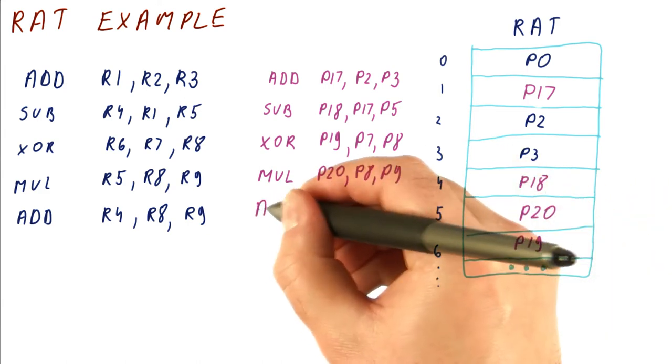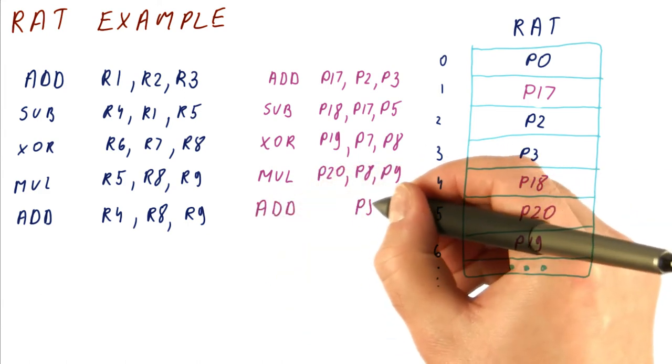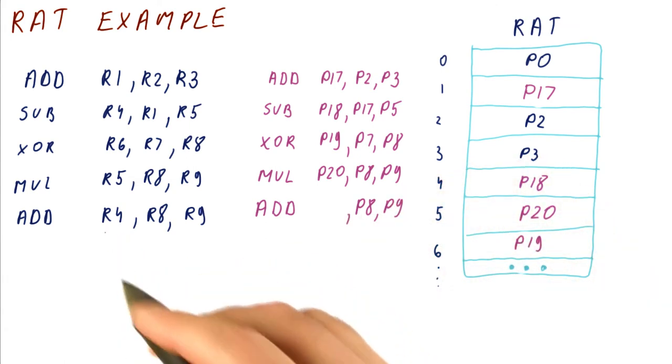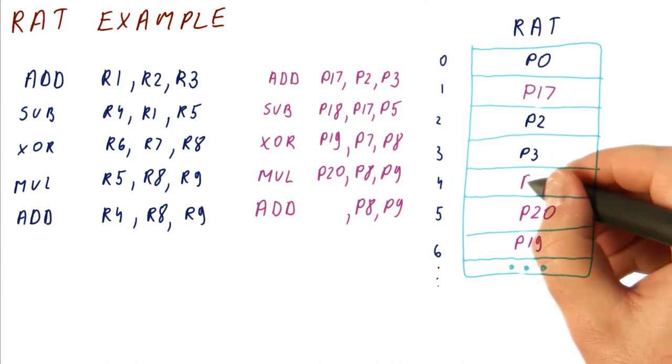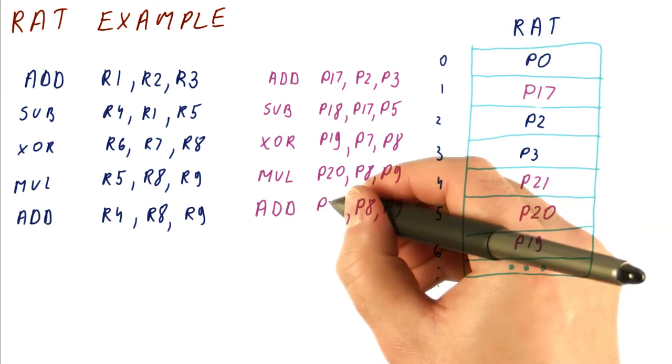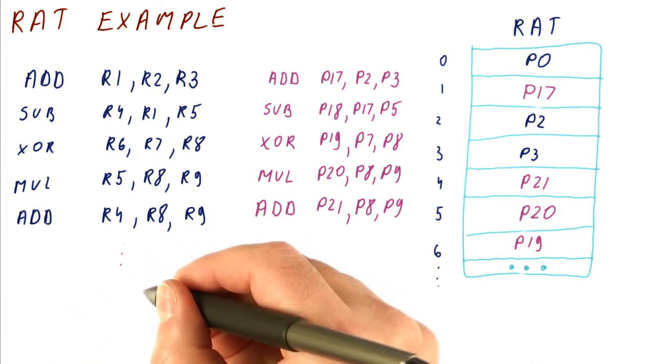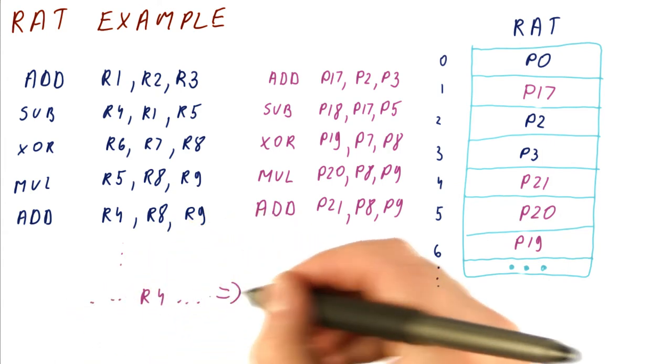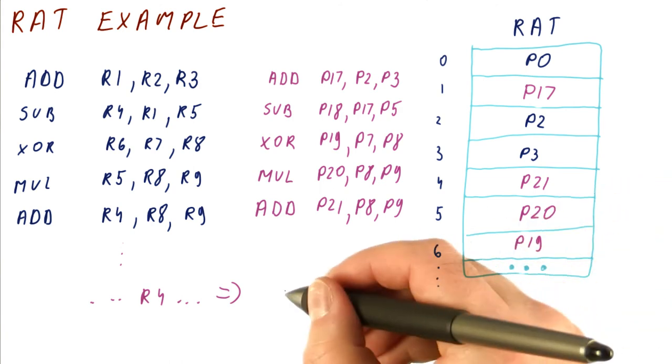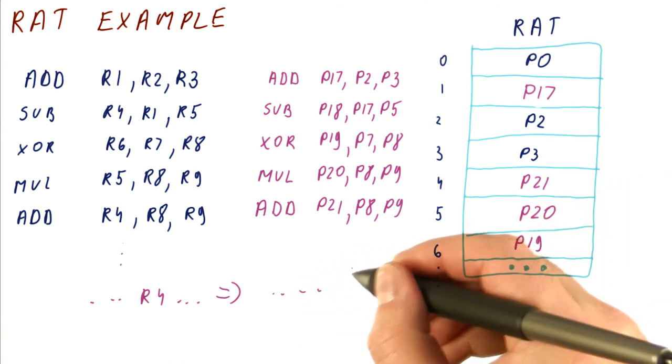And then we have this add. R8 and R9 are still in P8 and P9. The new value of R4 is now going to be P21. Now, this is an already renamed value, so we're going to rename it again and say P21. Later on, if there is an instruction that uses R4, so something, something, R4, it's going to be renamed into whatever P21.